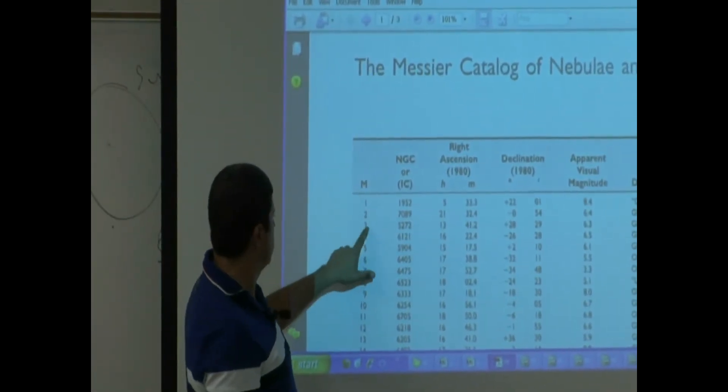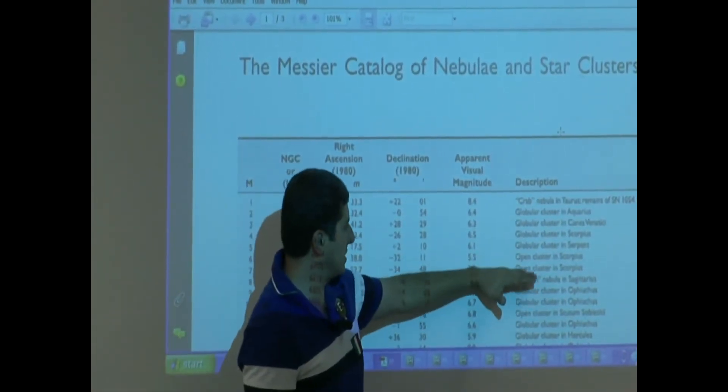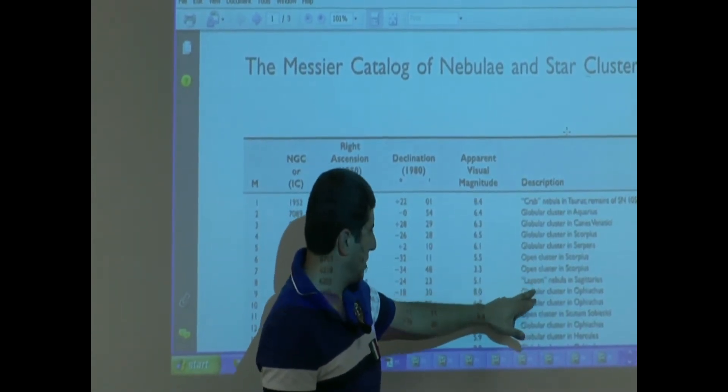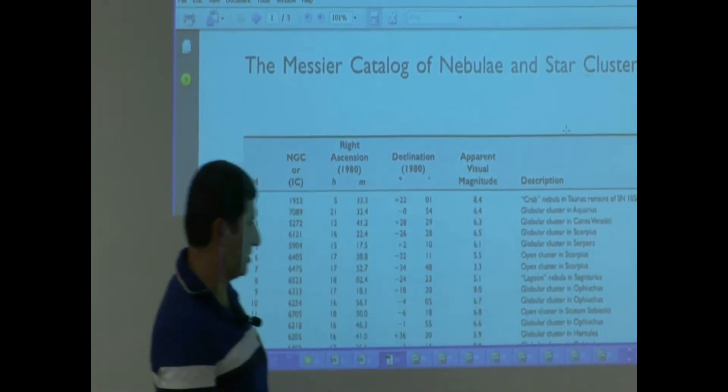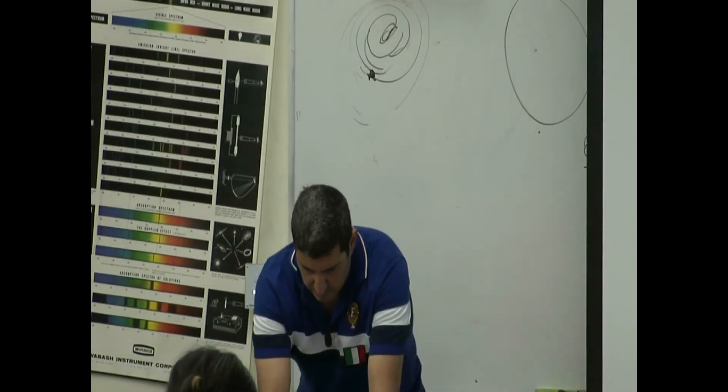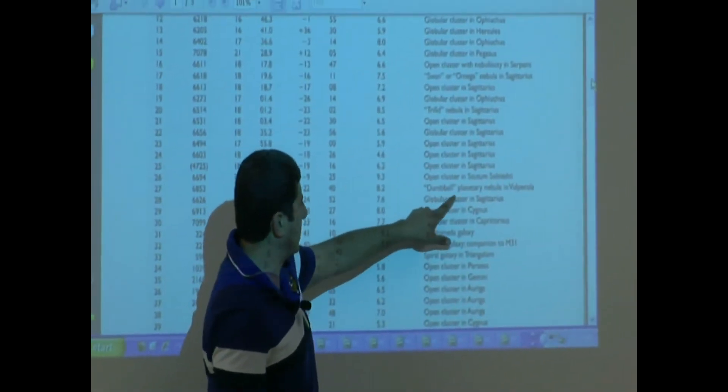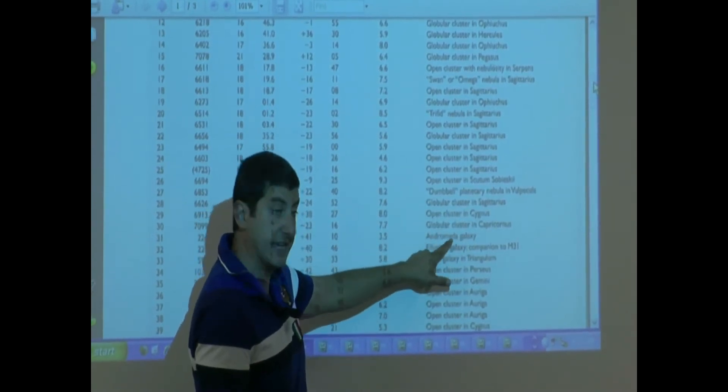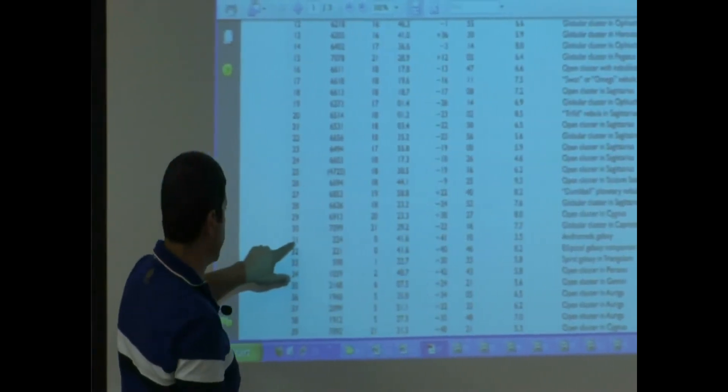Now let's start going through it quicker. Third object, globular cluster. Fourth, globular, globular. Then this one, open cluster, open cluster. Lagoon Nebula, globular cluster, globular cluster, open cluster. Open, open, open, Dumbbell Planetary Nebula, globular cluster, open cluster, global cluster. Andromeda Galaxy, that's the first one on the list, that's a galaxy. First one on that list, it's M31.